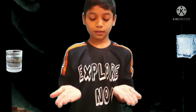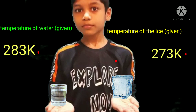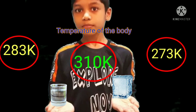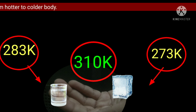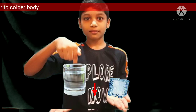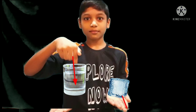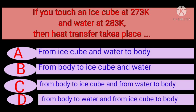The normal body temperature of human beings is 310 Kelvin. The temperature of water is 283 Kelvin and the temperature of ice is 273 Kelvin. Water and ice cubes are colder bodies when compared to the human body, which is the hotter body. Hence heat flows from body to water and ice cube. The answer is (b): from body to ice cube and water.